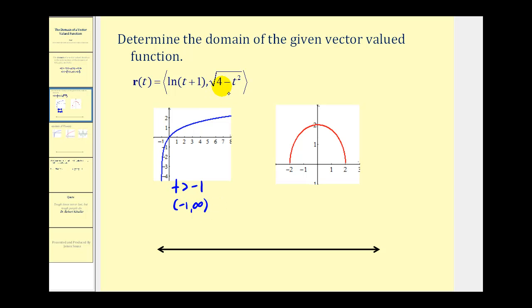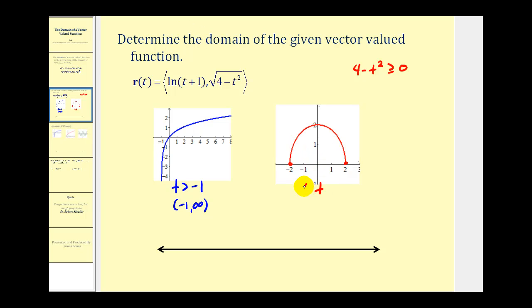For the square root of (four minus t squared), the number underneath the square root must be greater than or equal to zero, so we set up four minus t squared ≥ 0. When t equals two or negative two, we have zero ≥ 0, which is true. So those two endpoints are included in the domain. The domain for this function is t greater than or equal to negative two and less than or equal to two, or in interval notation, the closed interval from negative two to two.